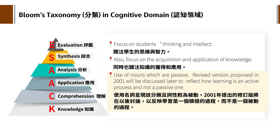我们先来看Bloom的认知领域。认知的话，我把它记忆为KC AASE，背第一个字母：K就是Knowledge，C就是Comprehension，A就是Application，再来是Analysis，然后是Synthesis，最后是Evaluation。这些就是认知领域，关注学生的思维跟智力。